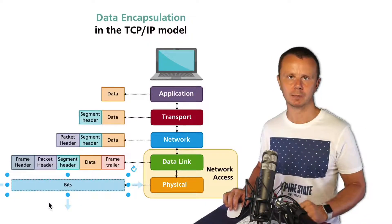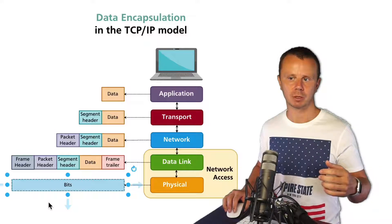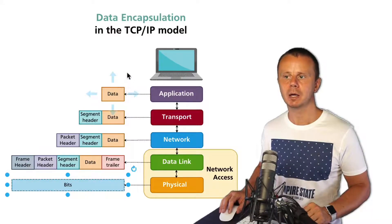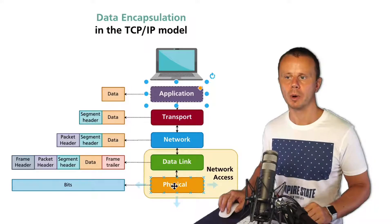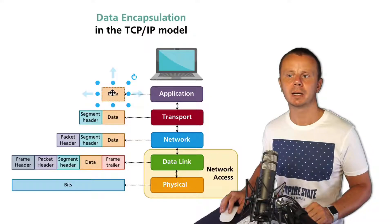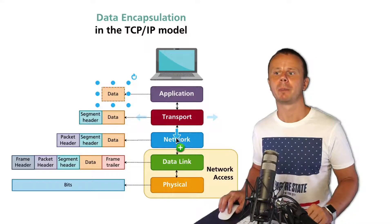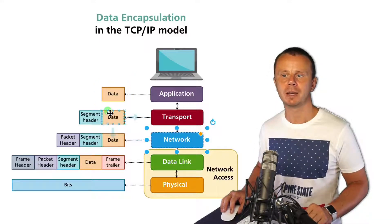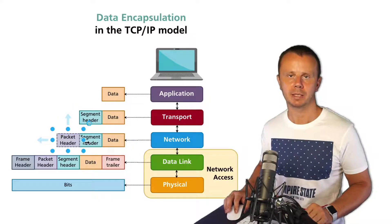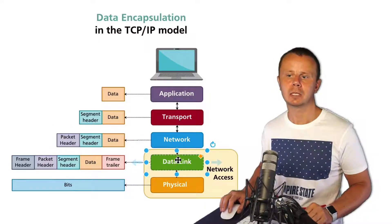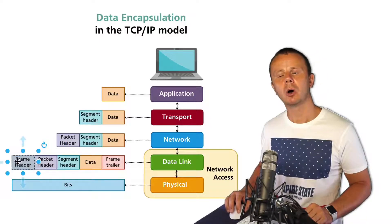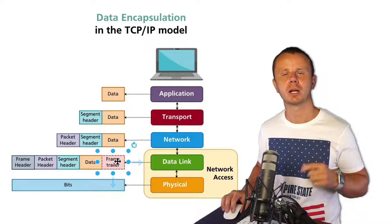That is the process of encapsulation. Notice that previous data and previous headers are not modified when data goes from an upper layer to a lower layer. The transport layer does not modify the data received from the application layer. Similarly, the network layer does not modify data or the segment header — it simply adds its own packet header. The same applies to the data link layer: it does not modify the data or segment header, and it adds a frame header.